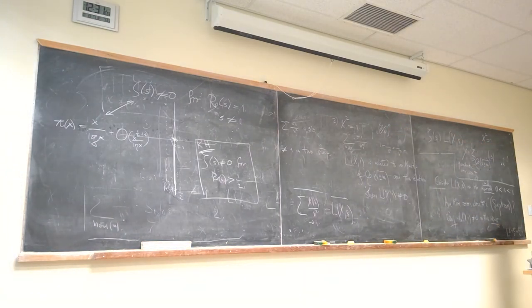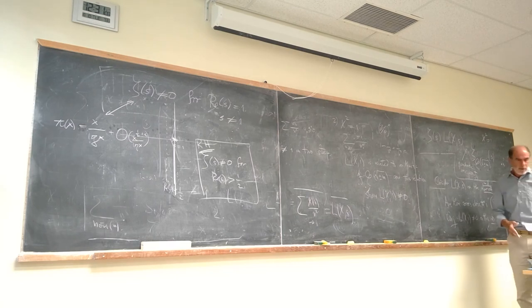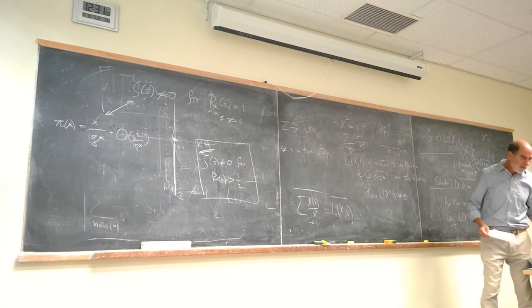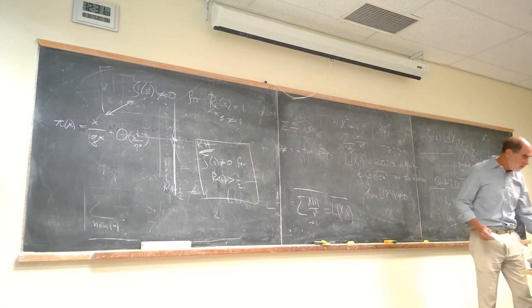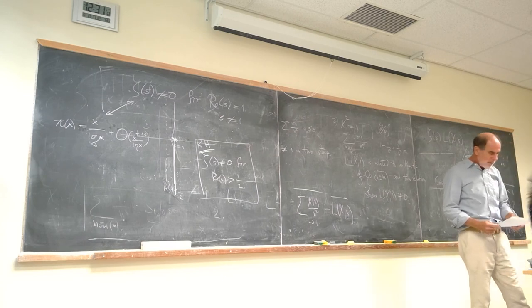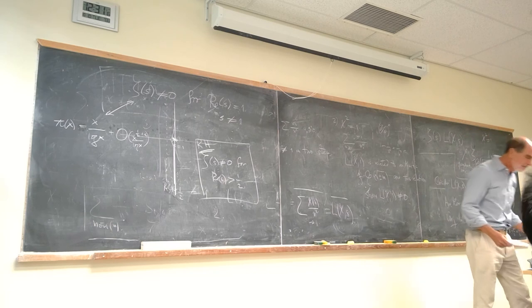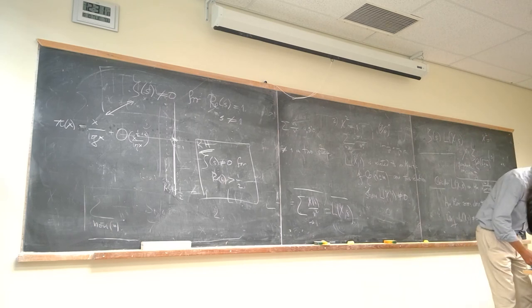That's all we'll do on Dirichlet's theorem, but we'll return once we've defined zeta functions of number fields to prove these results and derive explicit formulas for L(chi, 1). We'll start on zeta functions of number fields on Thursday. If you want to prepare, look at Samuel's book — I'll do a quick review of the basic theory of number fields before starting with the zeta function.